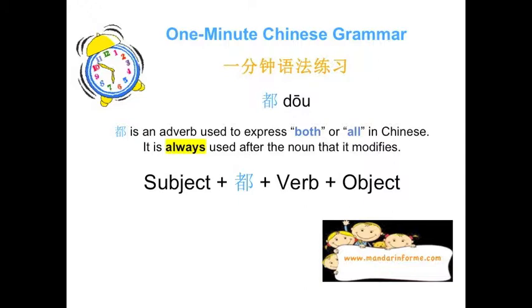For example, if I want to say 'we are all learning Chinese,' it would be 我们都学中文. What if the subject is only two people? Do we need to use a new word that means 'both'? No, we don't — you're lucky! In Chinese, 都 means 'all,' and it can also be used to express 'both.'